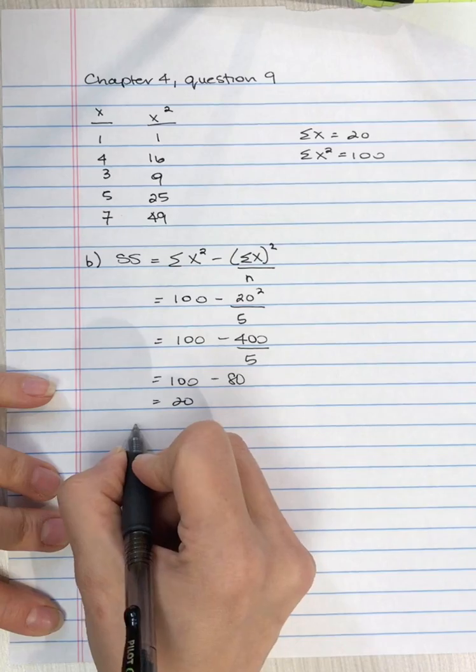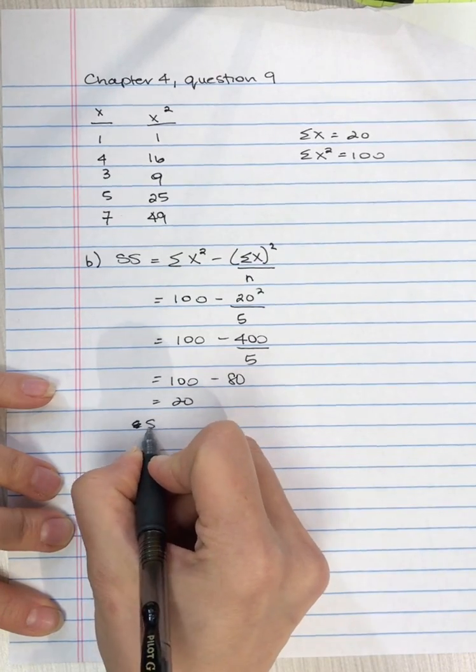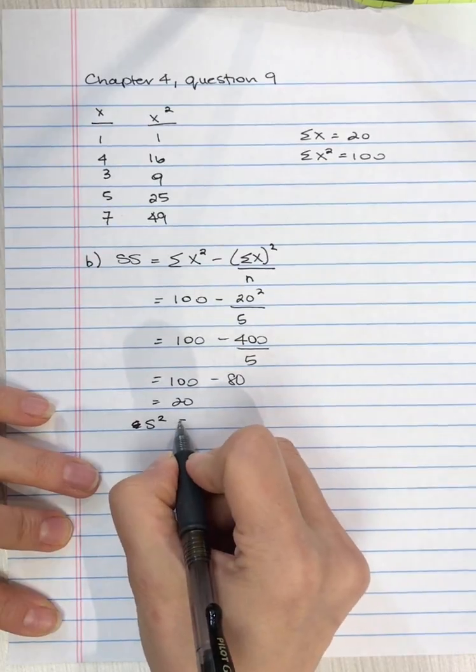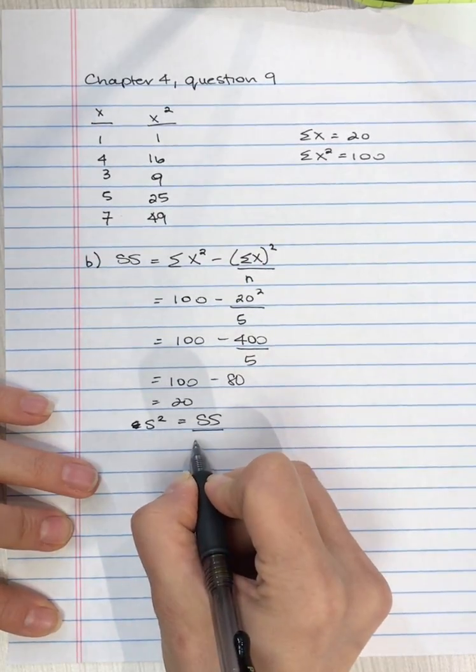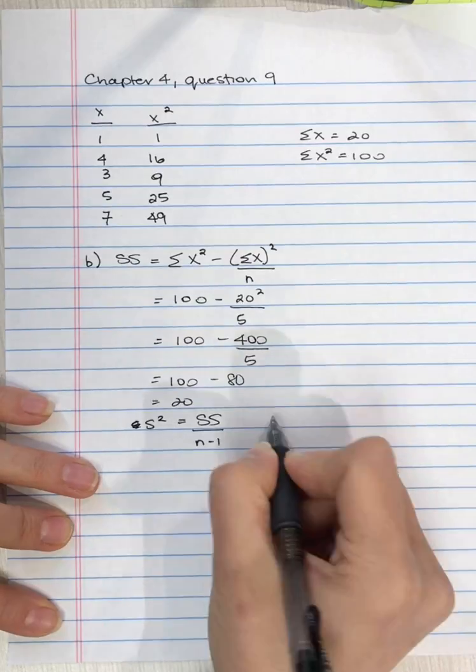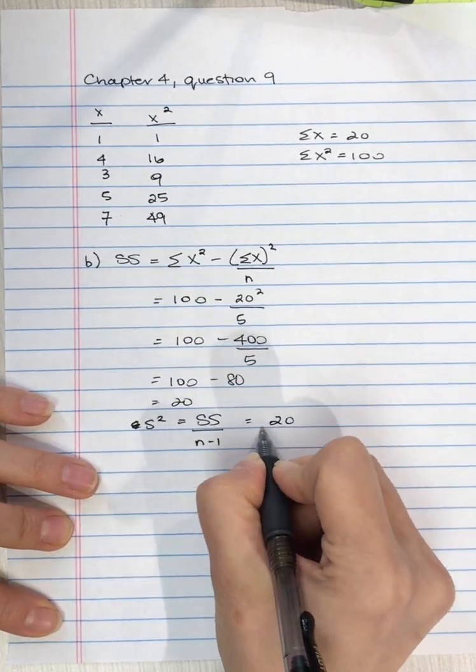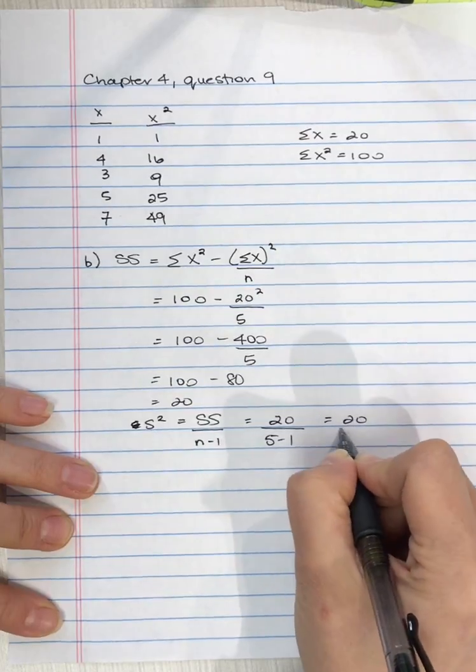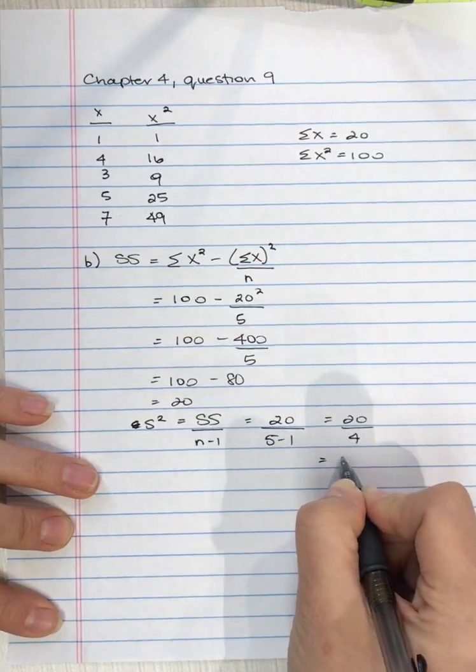Where it differs is in the calculation of the variance and the standard deviation. The variance equals the sum of squares divided by n minus 1. So 20 divided by 5 minus 1, which is 20 divided by 4, equals 5.